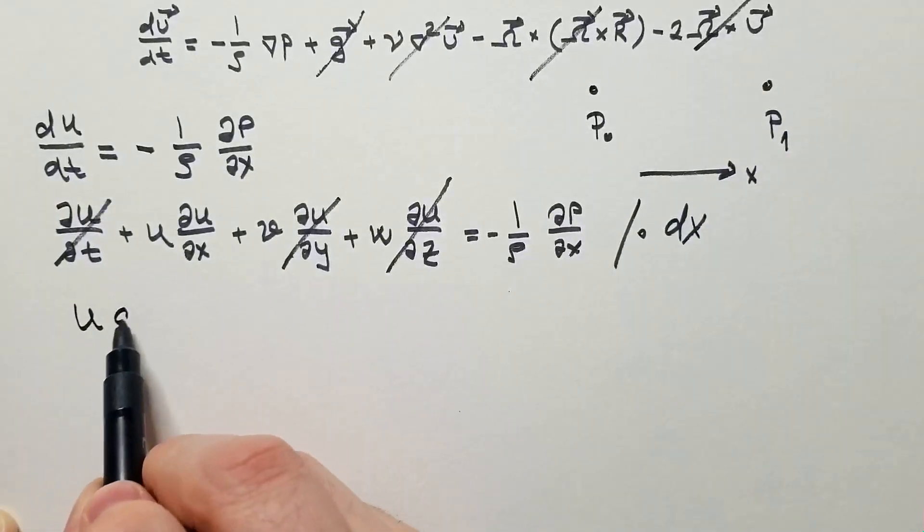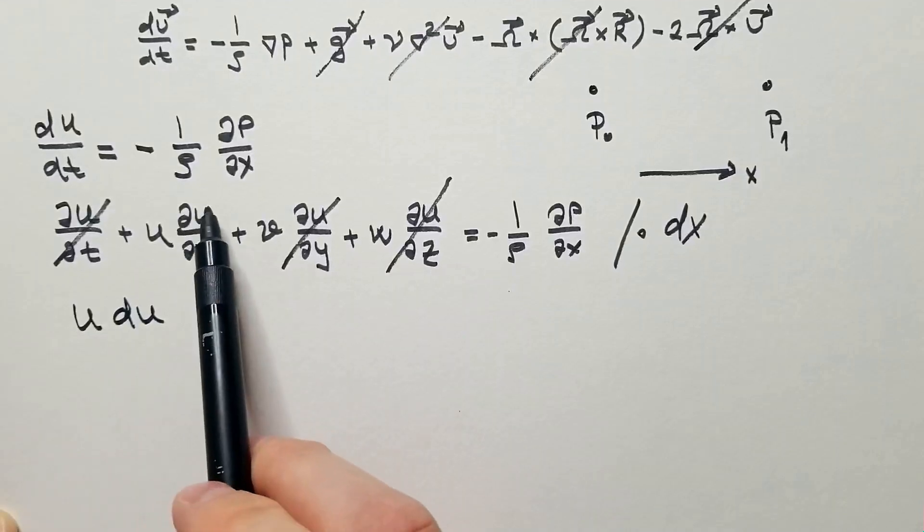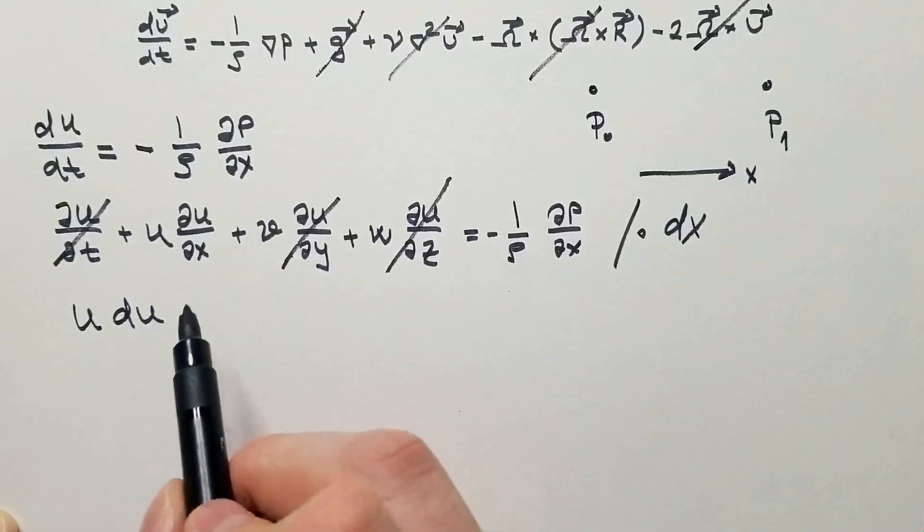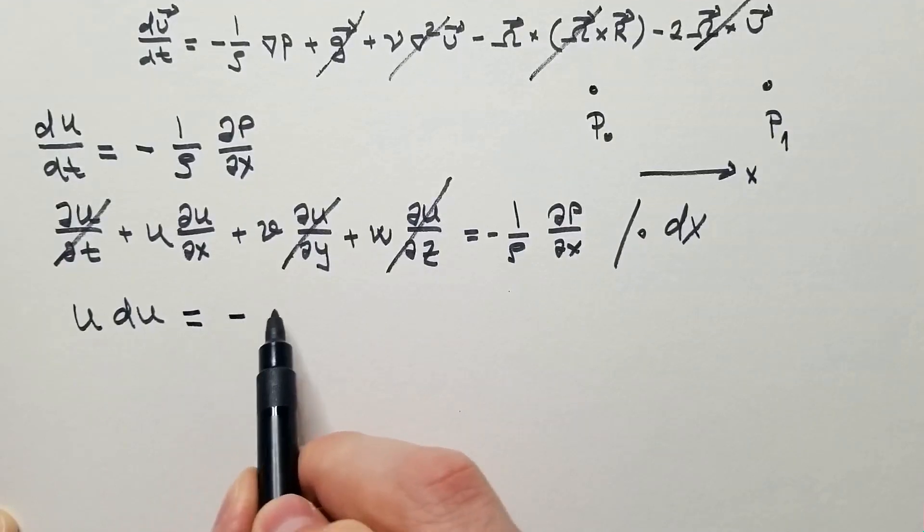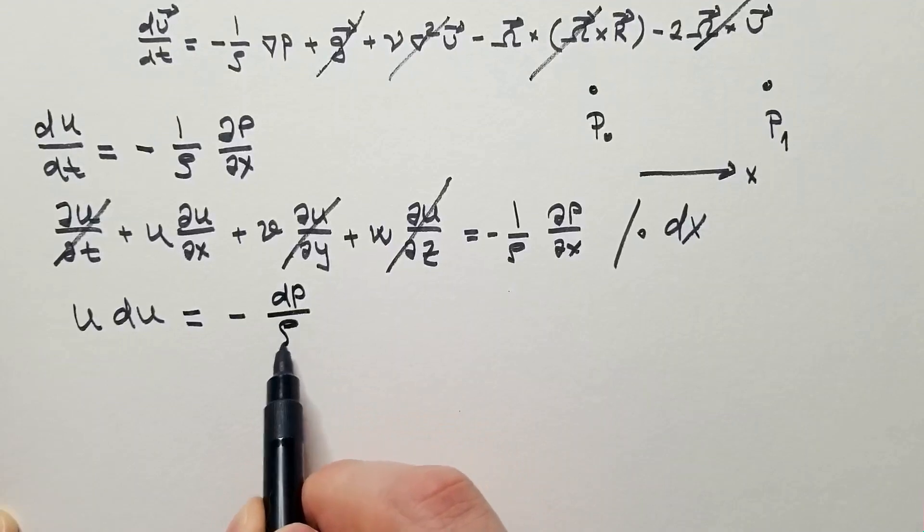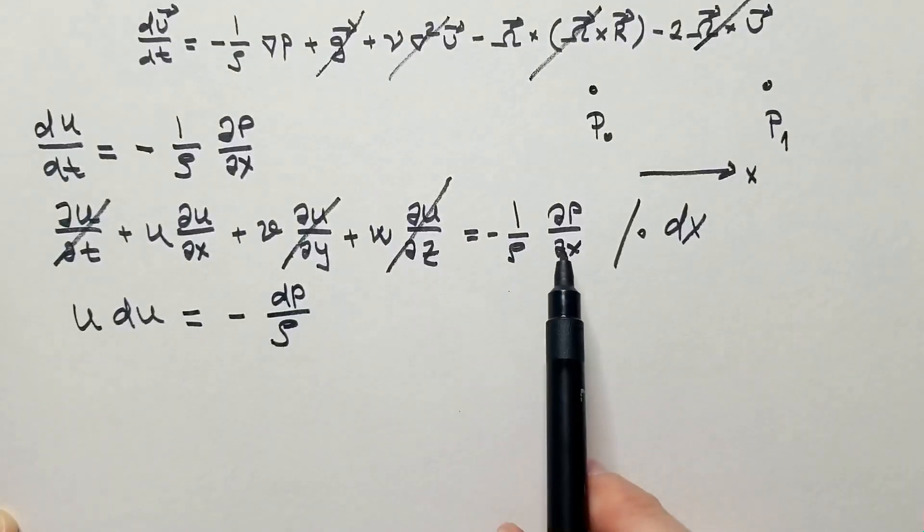I get here u du, because delta u, delta x times dx is total derivative of u, equals minus dp over rho, right hand side.